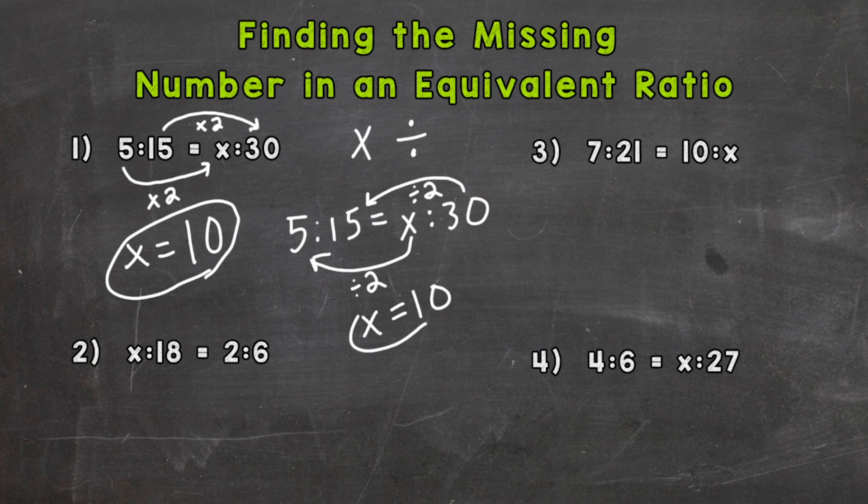Number two: x to 18 equals 2 to 6. Let's take a look at what we're given. Our 18 and our 6 correspond, so how do we get 18 to equal 6? We can divide by 3. We need to think, what divided by 3 will give me 2? We know 6 divided by 3 equals 2, so x equals 6.